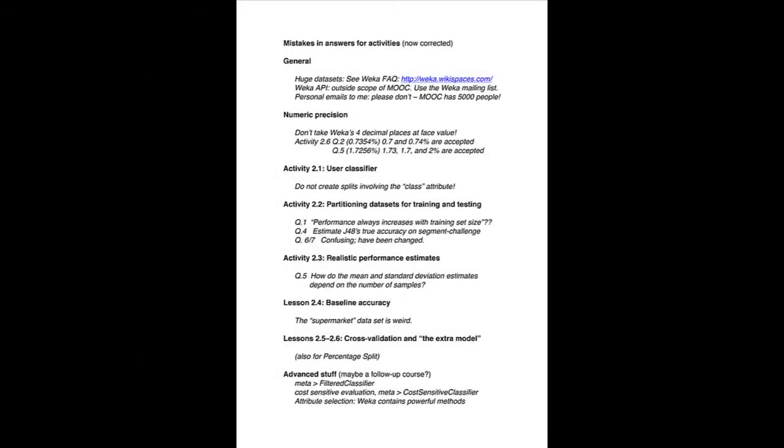Questions 6 and 7 were confusing and we've changed those. The issue there was how a classifier's performance and, secondly, the reliability of the estimate of the classifier's performance are expected to change with the volume of data. Performance is expected to increase as the volume of training data increases, and the reliability of the estimate is also expected to increase as the volume of test data increases. But with the percentage split option, there's a trade-off between the amount of test data and the amount of training data — that's what that question was trying to get at.